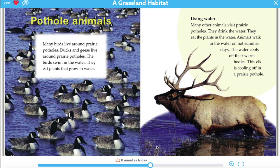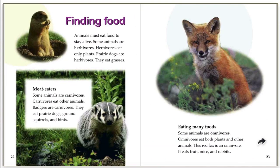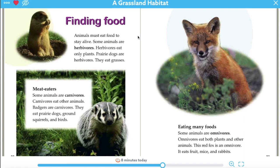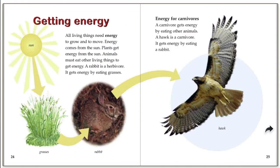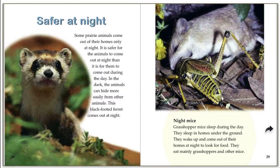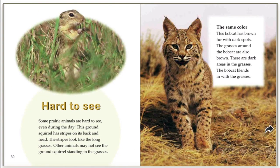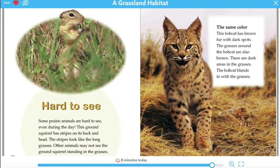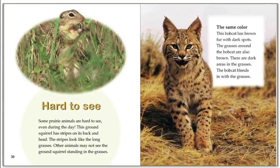I think I might be ready to illustrate, but let's keep reading to see if there's anything else I could add. Finding food - I don't think I need to add that to my illustration yet. Getting energy - I know there's going to need to be a sun because it's outside in nature. Underground homes - so there might be a hole in the ground, that's a good detail to add. And right here it says the grasses are taller with different colors, and there are dark spots in the grass too. I think I'm ready to start my illustration.